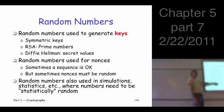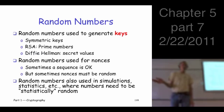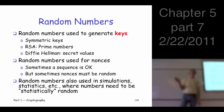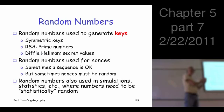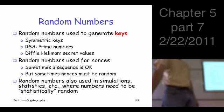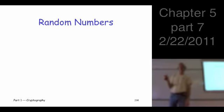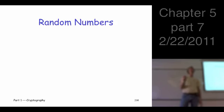Random numbers come up in a lot of contexts. If you ever take a statistics class, you often generate random numbers to do certain experiments. Those random numbers need to be statistically random — they need to satisfy certain statistical properties about the mean, the distribution, and the variance. But that's not good enough for cryptographers. We need more. They do need to be statistically random, but what else has to be true?